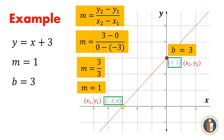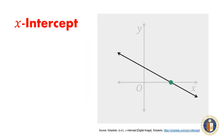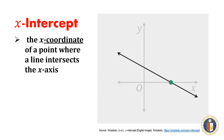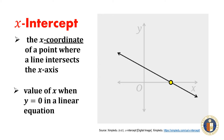Hence, the y-intercept is indeed 3. Sometimes we also want to find the x-intercept of a line. The x-intercept is the x-coordinate of a point where a line intersects the x-axis.